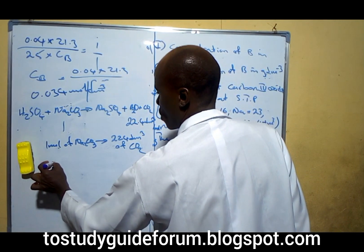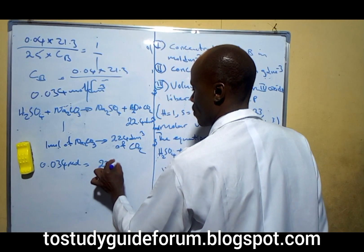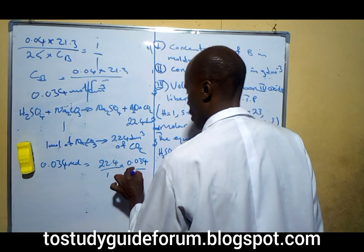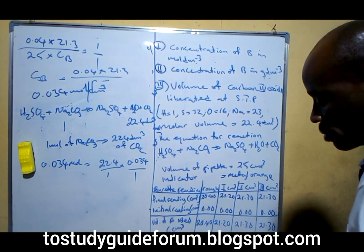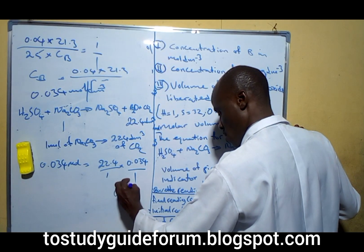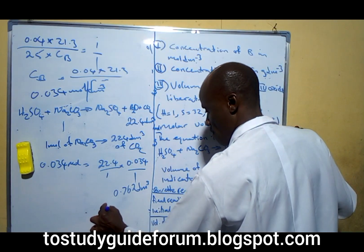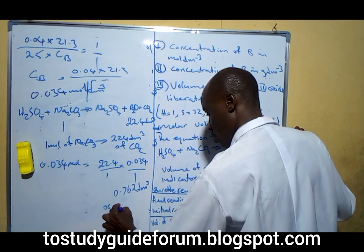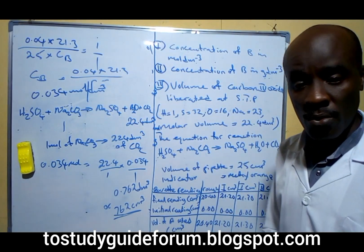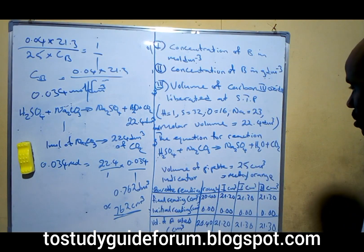Now 0.034 moles will then give us 22.4 over 1 times 0.034. Multiplying through, what we have will be 0.76 dm³. If we want to convert it to cm³, 0.76 dm³. That is what we have here.